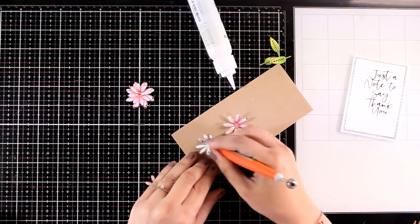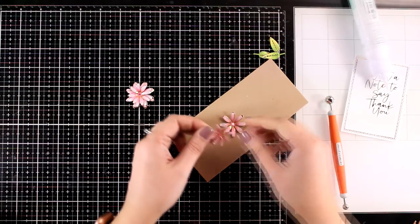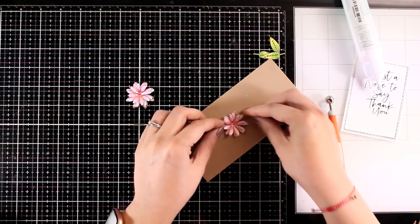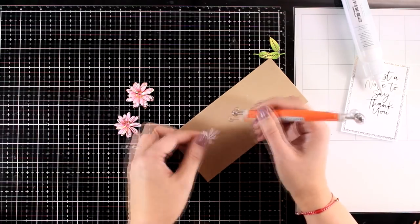Again I'm going to stack one on top of the other with a dot of glue at the center. Having the flowers foiled and dimensional they catch the light and they make it look really pretty and gorgeous.